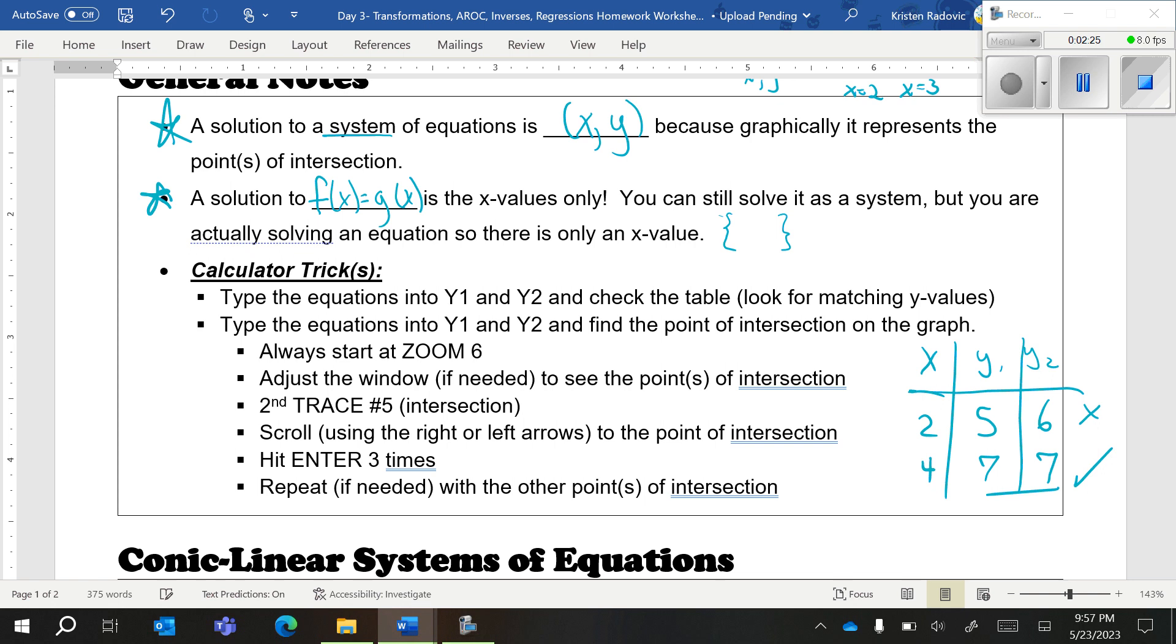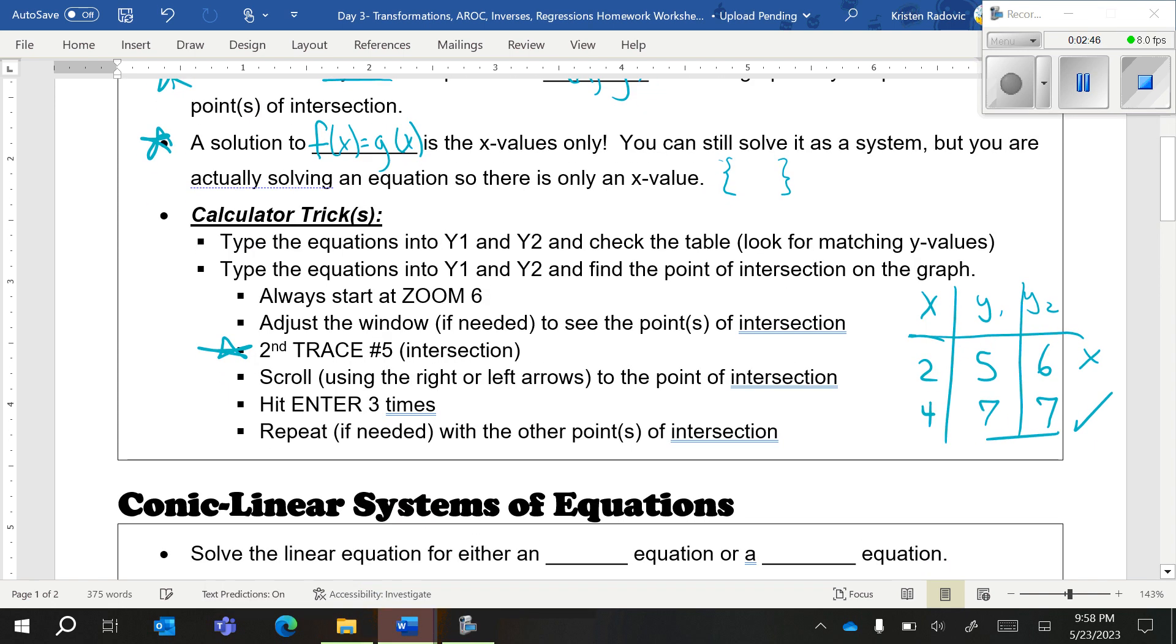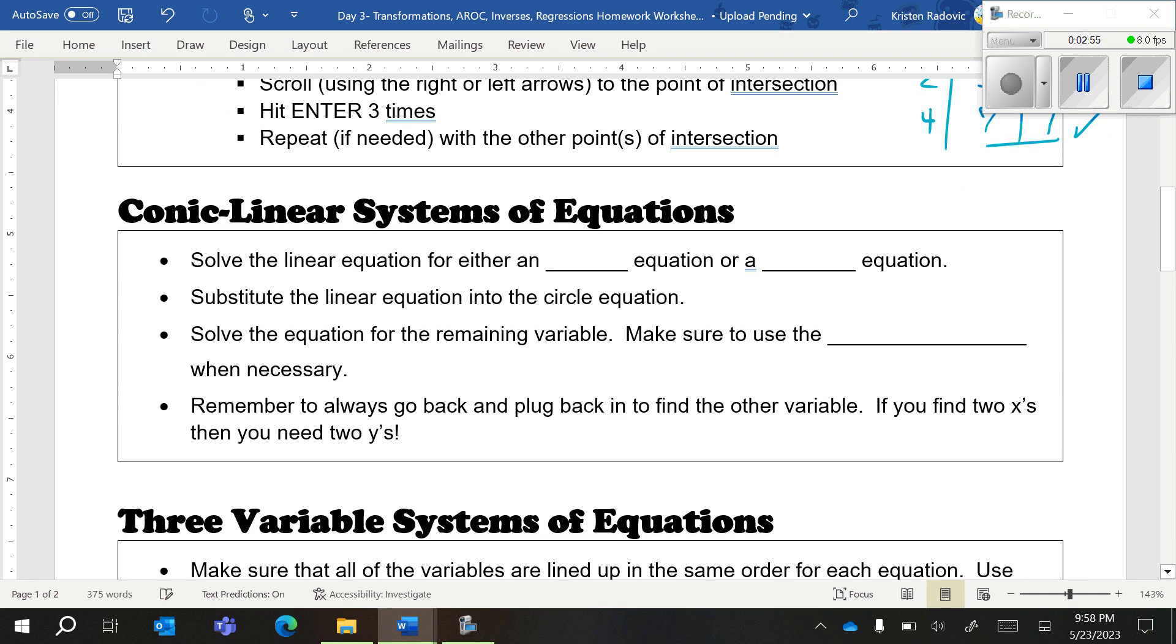However, what would be a solution is if you had the same numbers. If the y values match, then you know that's a solution to your system. If you want to find an exact answer, if you want to find the exact point of intersection, you have to look at the graph and do second trace intersect. That will allow you to find the point of intersection. That is very important. We're going to practice that in class tomorrow.